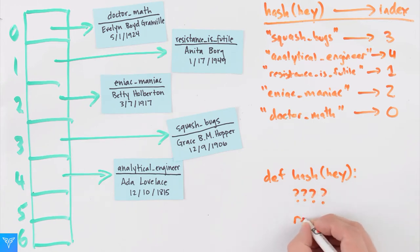When choosing a hash function, we want the function to return the same value whenever it sees the same key. So if we're looking for Dr. Math, the hash function has to return zero every time.